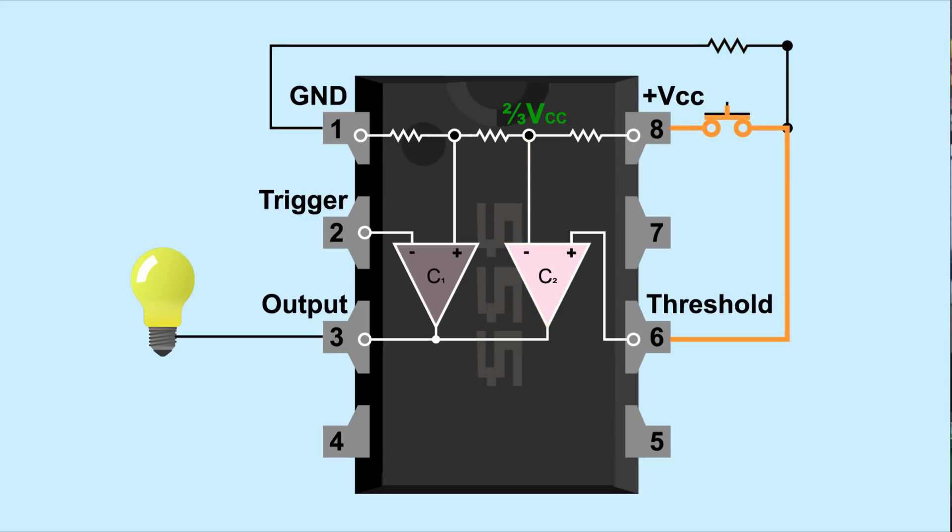And when the button is pressed, the pin takes the path of least resistance through the button, pulling the pin high to Vcc. This causes comparator 2 to output high, causing the 555 to output low. Release the button and the 555 continues to output low. The state is stable. The 555 timer is now set up in bi-stable mode. Let's recap.